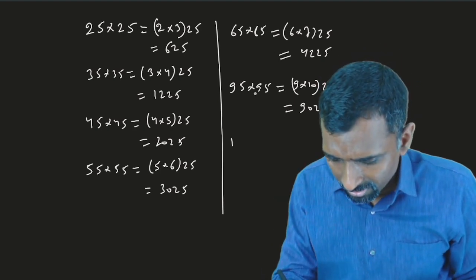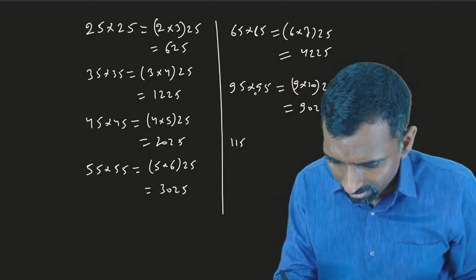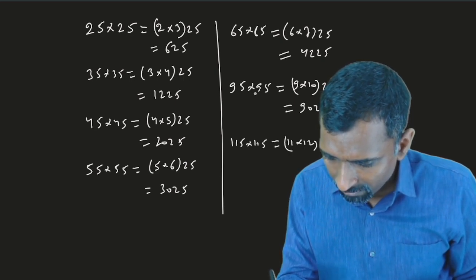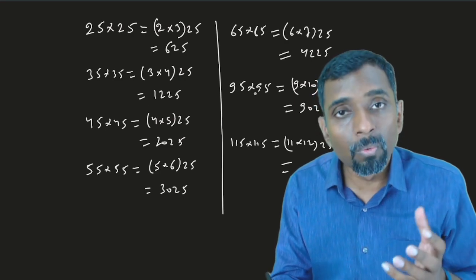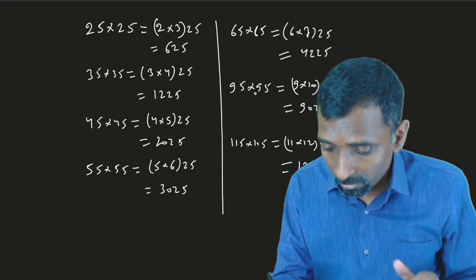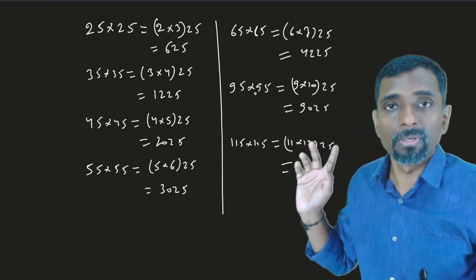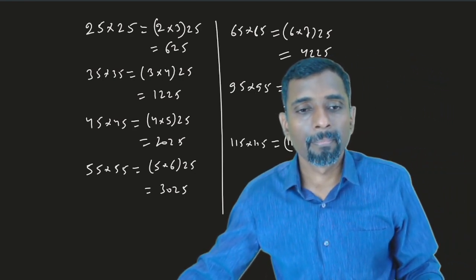One more time, I'll give a 3-digit number. It will be 115 multiplied by 115. It is 11 multiplied by 12, then 25. 11 times 12 is 132, so it will be 13225. Shortcut method.